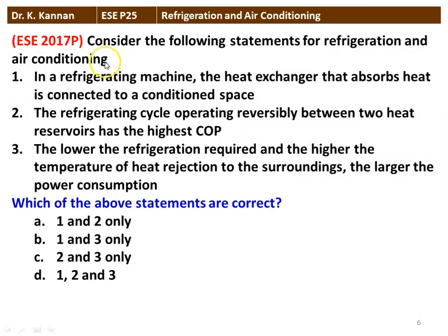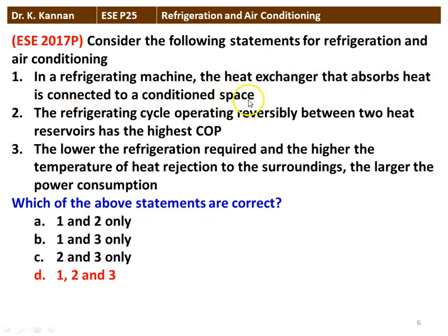Next question from the 2017 question paper: consider three statements for refrigeration and air conditioning. One — in a refrigerating machine, the heat exchanger that absorbs heat is connected to the conditioned space. Two — the refrigeration cycle operating reversibly between two heat reservoirs has the highest COP. Three — the lower the refrigeration required and the higher the temperature of heat rejection to the surroundings, the larger the power consumption. All three statements are correct. The heat-absorbing exchanger is the evaporator (indoor component); the reversible cycle is the Carnot cycle with the highest COP.